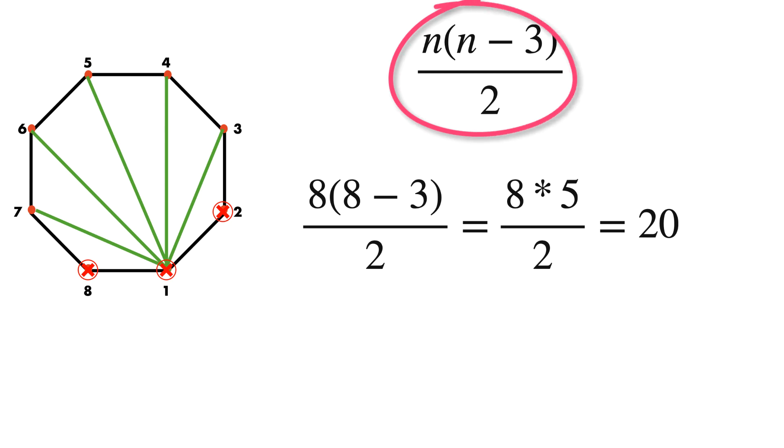Just remember this formula: n times n minus 3 over 2. You can find number of diagonals in any polygon in less than 5 seconds.